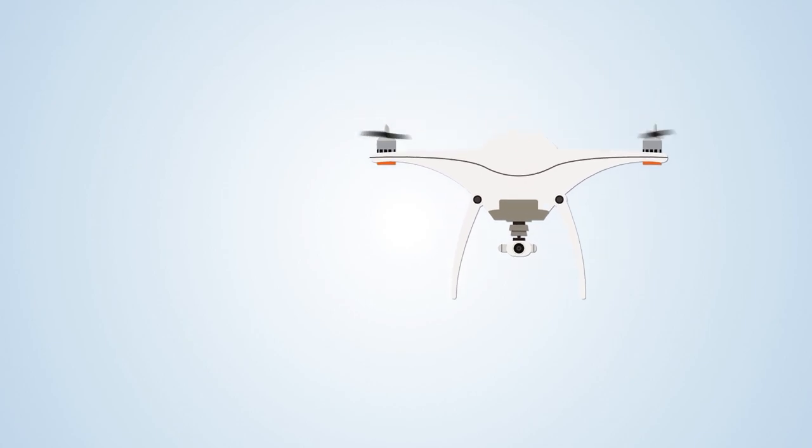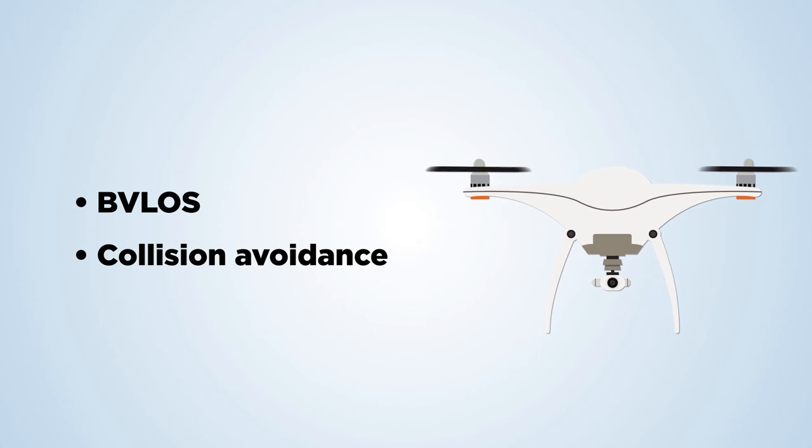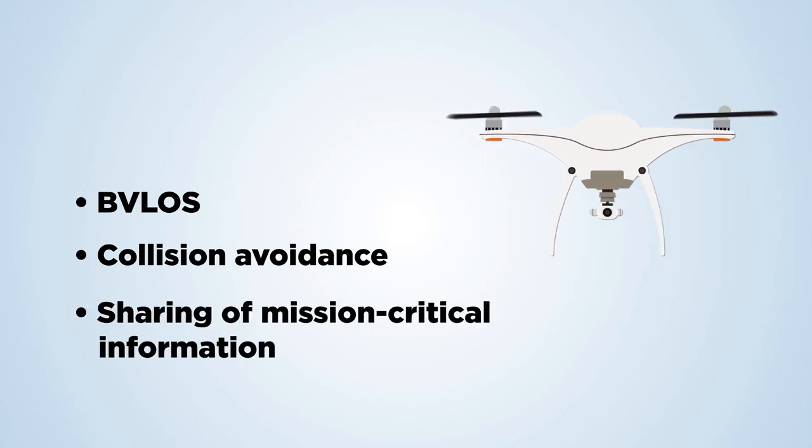UAS-to-UAS communications can support urban air mobility in three key ways: beyond visual line-of-sight communications, or BVLOS, collision avoidance, and the sharing of information.